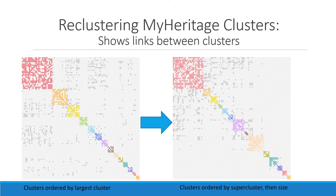Here's an example of a MyHeritage autocluster chart on the left where the clusters are in order by the largest cluster. The top-left red cluster has the most matches, so it's first. The gray squares that are not in a colored cluster show connections between clusters. The red cluster has connections to the yellow cluster because there are gray squares between them, showing that they are shared matches with people in both clusters. So it would be better to sort these by clusters that are linked to each other.